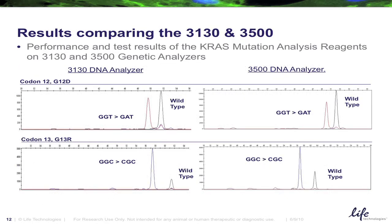Here is an example of what the data looked like. We see a very clear mutation peak in relationship to a very clear wild type peak. In terms of these two instruments, the data is very similar with just a very slight normalization of the background on the 3500.